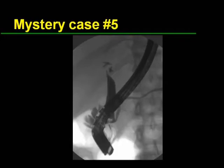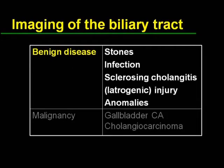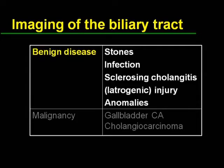When we think about biliary disease, there are only so many processes that can occur. By far and large, most of the processes we see on a daily basis are benign disease. They include stones in the gallbladder or common duct, various types of infection or non-infective causes of cholangitis. There may also be injuries — traumatic or iatrogenic — and anatomic anomalies play a fair role in the triage of all of the above. We often worry about malignancies such as gallbladder cancers and cholangiocarcinomas, but those are much less common, fairly rare, though important to know about.